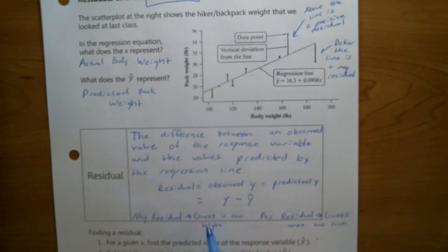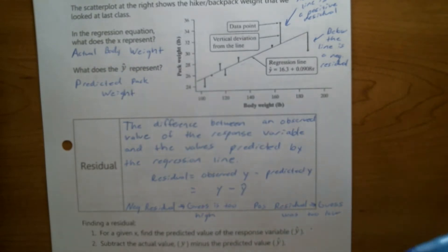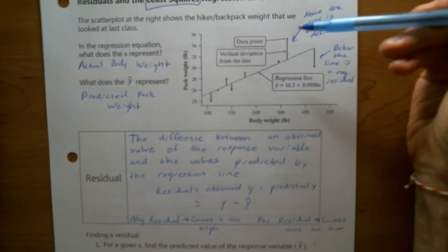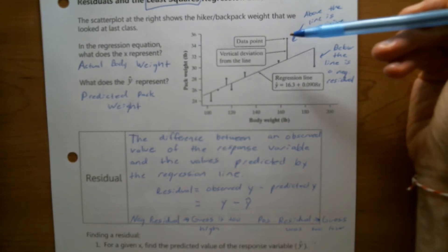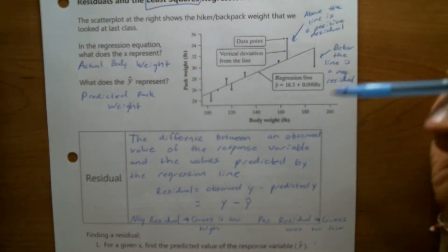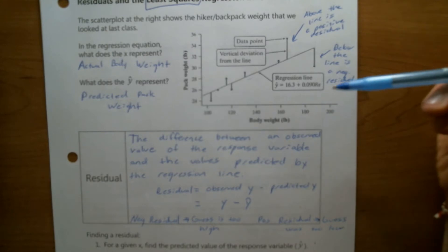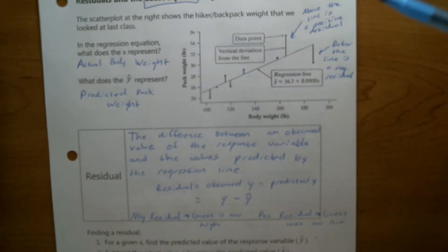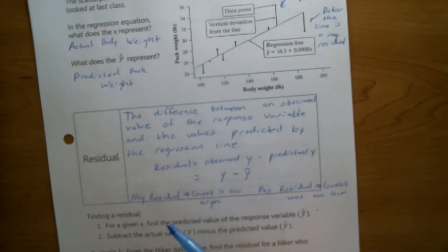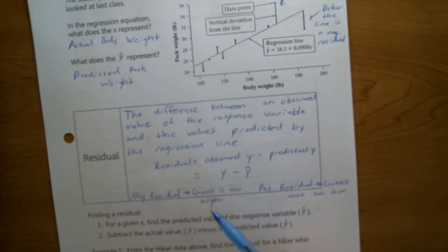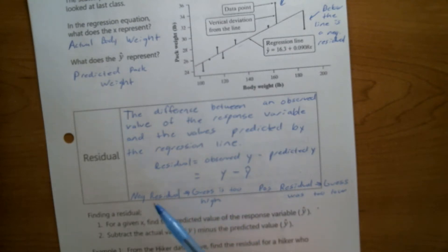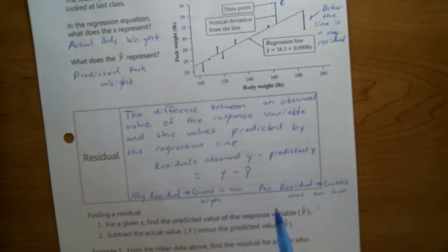Be careful with questions that ask whether your guess was too high or too low, because the result is a little non-intuitive. Points above the line are positive residuals and points below are negative — that part is intuitive. But when framed in terms of guessing: a guess too high gives a negative residual, and a guess too low gives a positive residual.